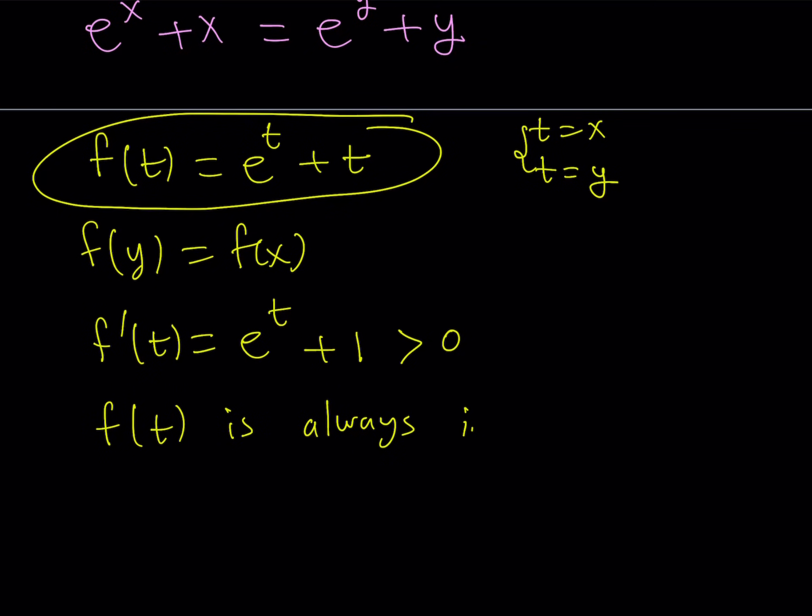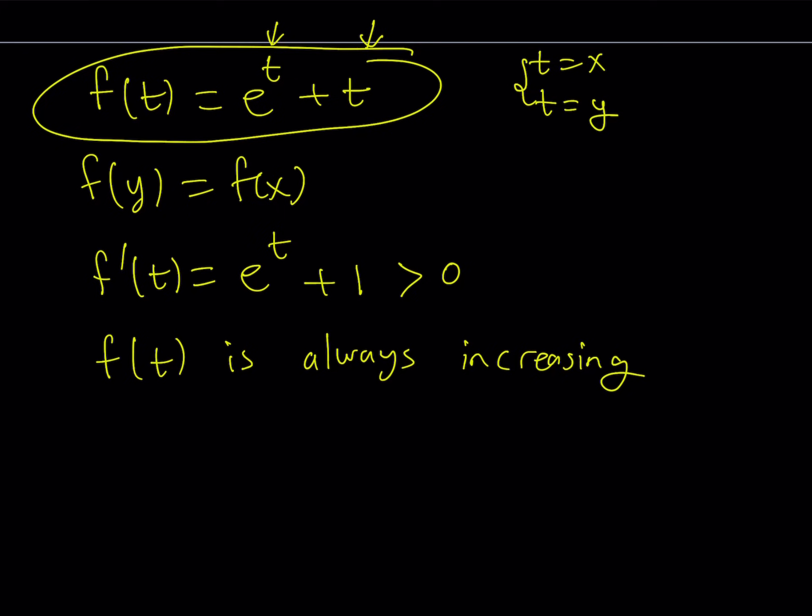Which means that f of t is always increasing. Now this is important because we have a function that's always increasing. And f is also a continuous function because e to the power t is continuous, t is continuous, and their sum is also going to be continuous.